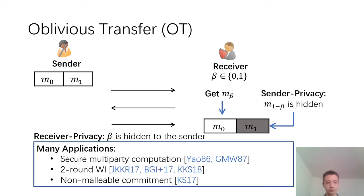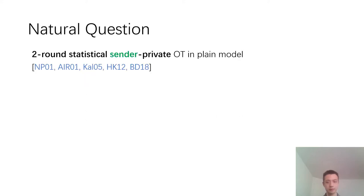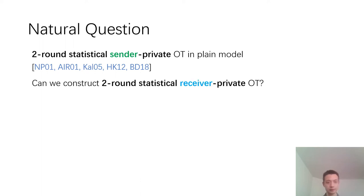Oblivious transfer is also a very important primitive in cryptography with many applications, such as secure multi-party computation, two-round witness indistinguishable protocols, and non-malleable commitments. There are many previous works constructing two-round statistical sender-private oblivious transfer in the plain model. So one natural question is: can we construct a two-round statistical receiver-private oblivious transfer?